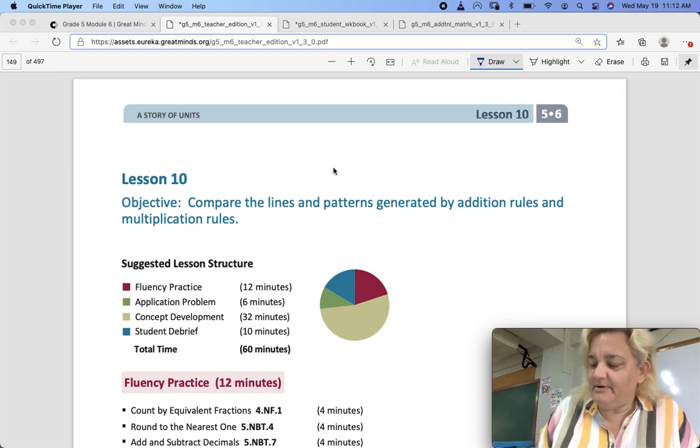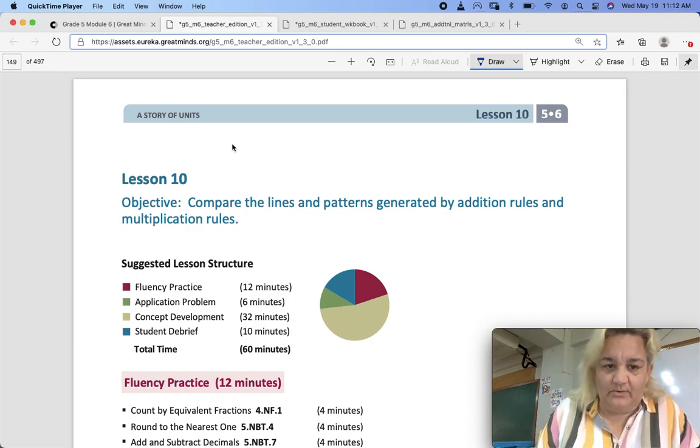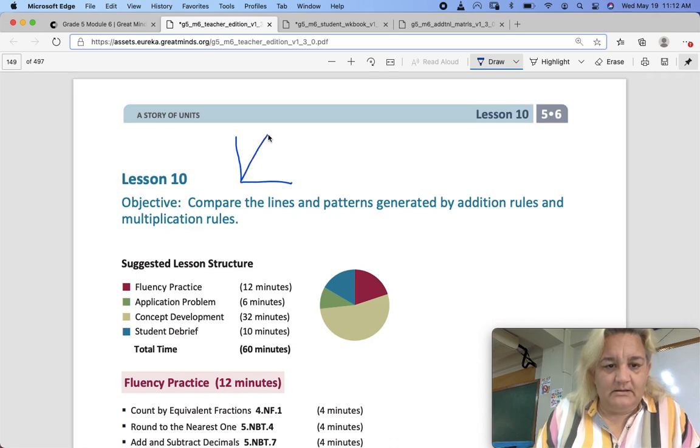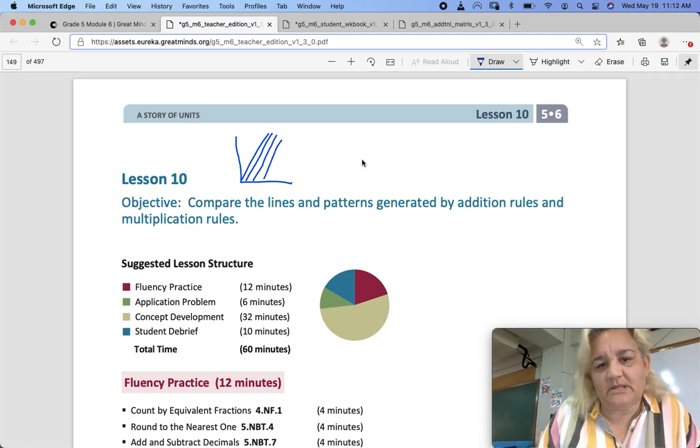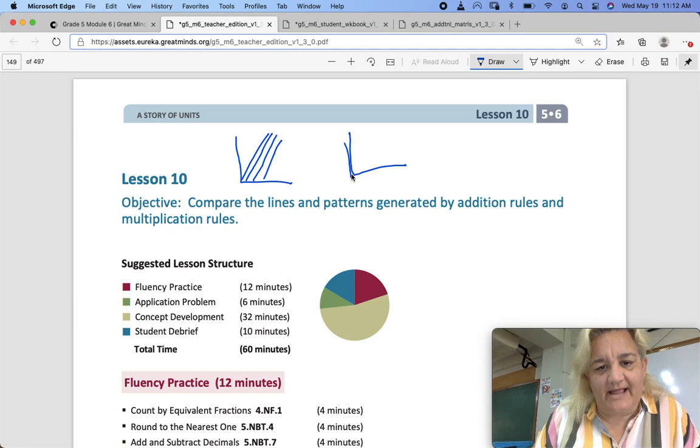Do you remember in Lesson 9 and Lesson 8, we talked about when you do addition to your X and your Y, you create parallel lines. When you do multiplication, the lines start to go up higher like this.